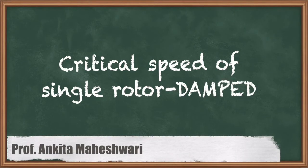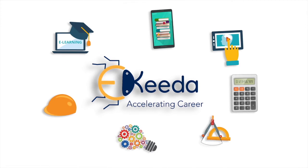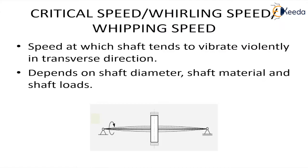Hello everyone. In this video we will discuss the critical speed of a single rotor in damped systems. We have already discussed that critical speed, also known as whirling speed or whipping speed, is basically the speed at which the shaft tends to vibrate violently. This critical speed depends on various factors, including what type of system we are using — damped or undamped.